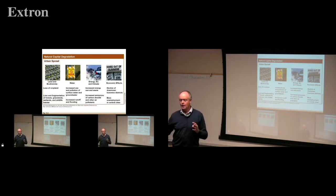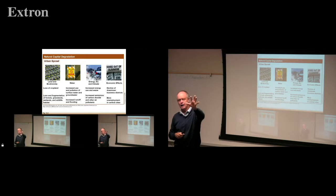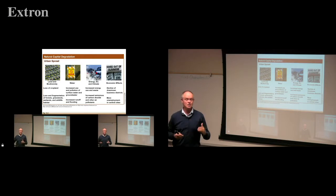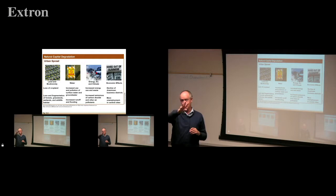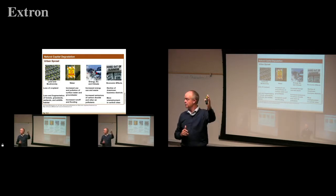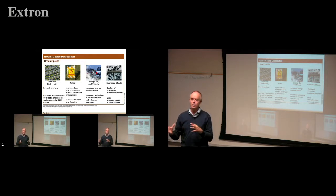The bighorn sheep need to migrate. They traditionally used to migrate from the Lucerne Valley mountains out into the Mojave. But the moment we put in the town of Lucerne Valley, put up renewable energy, houses, and roads, that population of up to 40 bighorn sheep that live almost in our backyard no longer crosses Highway 18. That's an example of urban sprawl limiting wildlife territory.